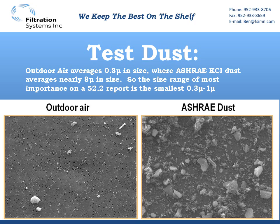This shows a picture of outdoor air and ASHRAE dust magnified. Outdoor air averages only about 0.8 microns in size, where the ASHRAE KCl dust averages nearly 8 microns in size. Most importantly in a 52.2 report, you should look at the smaller size range of 0.3 to 1 microns, as those are going to be the majority of particles actually in the air.